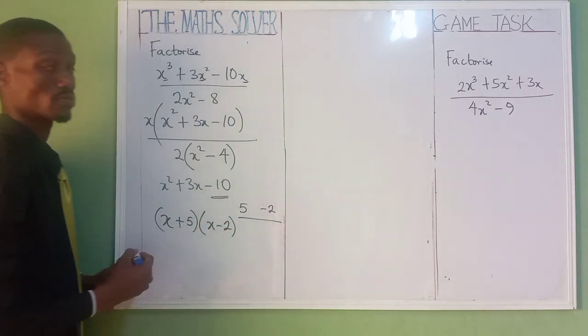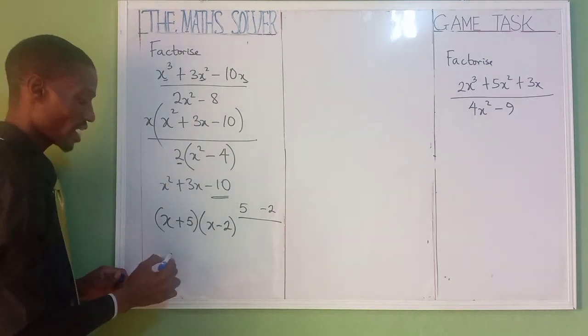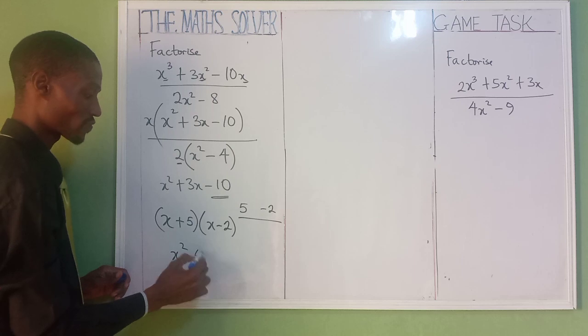Then the next one, don't forget we have factorized this. You now have x² - 4.